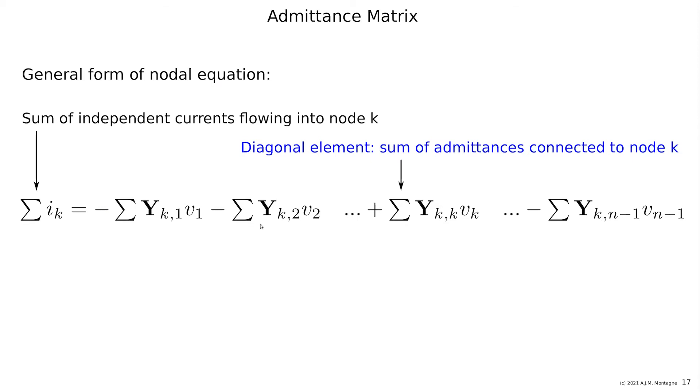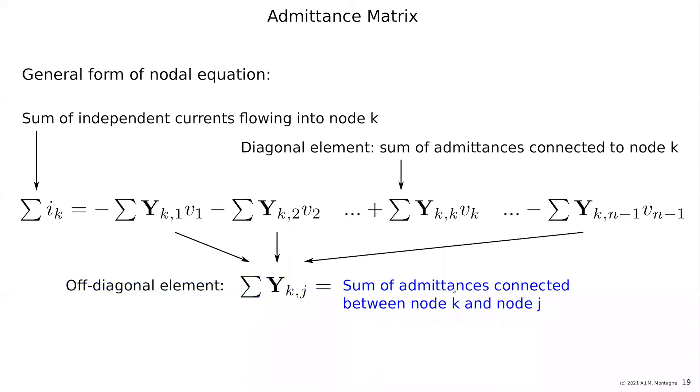And all the other terms are off diagonal elements. And they are the sum of the admittances connected between node k and node j. If you have Y_kj.